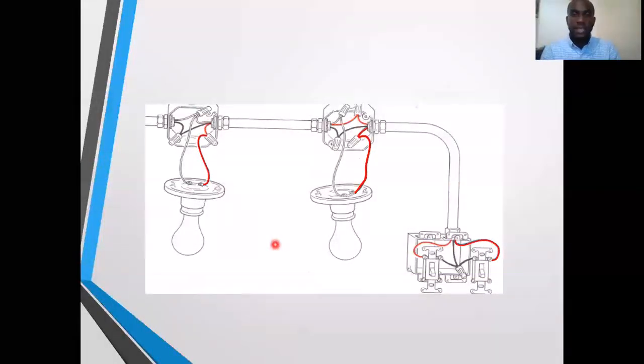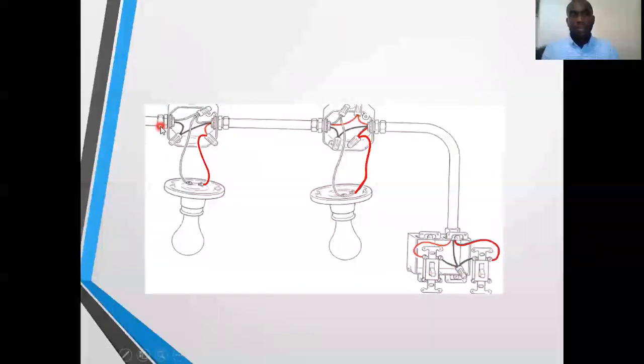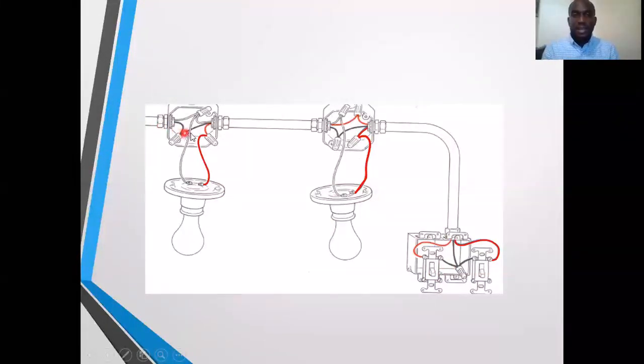Now in many cases you will find this happening where two single pole switches are sharing the same device box and they are independently controlling devices. So in this case, the source is at the first lamp. You will send the main black straight through to the switch box where you will share it between both switches. That is key. Remember to share it between both switches.